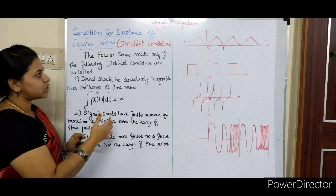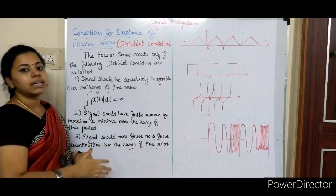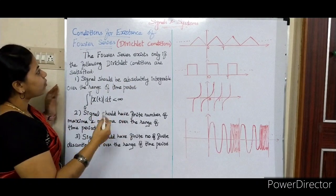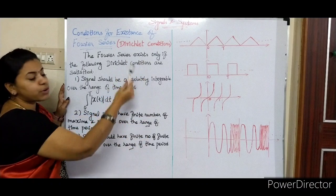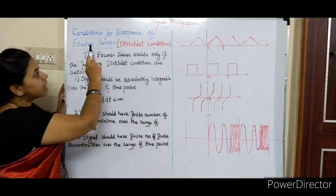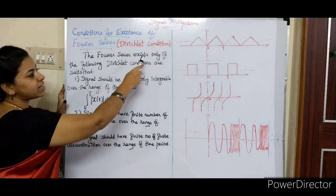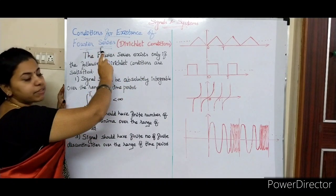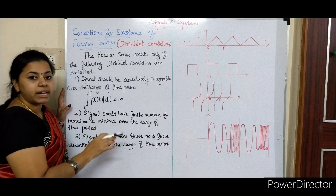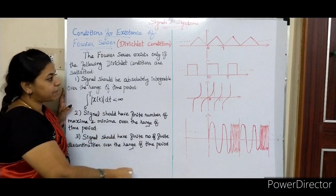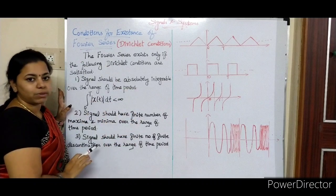Dirichlet was a mathematician, and these conditions are named after him. In university exams, the question on Dirichlet conditions for Fourier series is very important. The conditions for existence of Fourier series — this is a commonly confused topic. If you are asked this question in the exam, you have to explain it clearly as part of signals and systems.